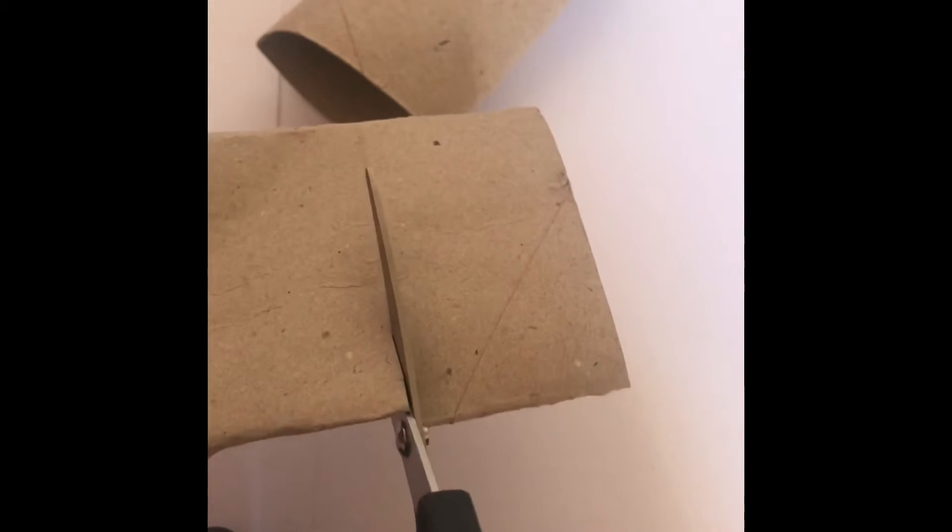So first what you'll need is two toilet roll holders. Take your first toilet roll holder and just cut off the top of your first holder.